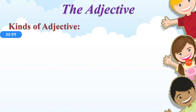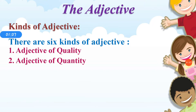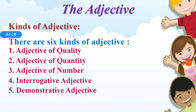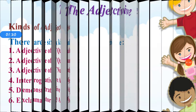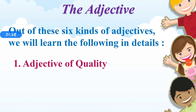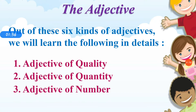Kinds of adjectives. There are six kinds of adjectives: adjective of quality, adjective of quantity, adjective of number, interrogative adjective, demonstrative adjective, and exclamatory adjective. Out of these six kinds, we will learn the following in detail: adjective of quality, adjective of quantity, and adjective of number.